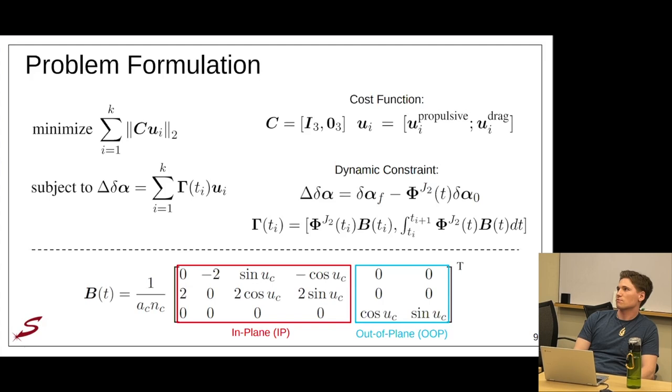My problem formulation, as shown on the left, is to minimize the cost of the set of maneuvers subject to a dynamics constraint. The cost function on the top right shows the control actions U, which concatenate the propulsive and differential drag control actions together, and the selector matrix C, which selects only the propulsive maneuvers as those that have cost. The dynamics constraint has a quantity known as the pseudo-state, which is invariant to the control problem, which is simply the final desired state given the initial state propagated across the control window. This is set equal to the effect of all maneuvers in the control window propagated to the end of the control window by control matrix gamma.